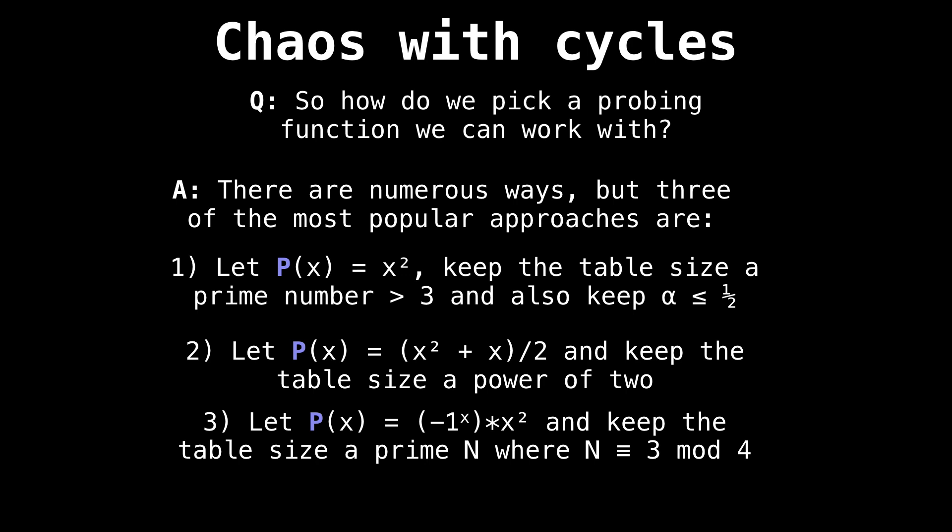The last and final one says that P(x) should be the alternating sign of x², and keep the table size a prime number where N is congruent to 3 mod 4. For example, we could say that our table size was 23, because that's a prime number and it's congruent to 3 mod 4.